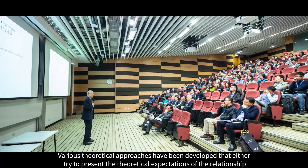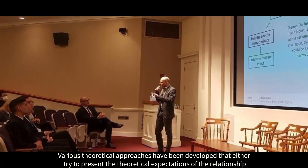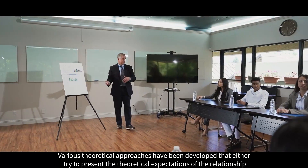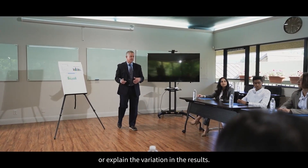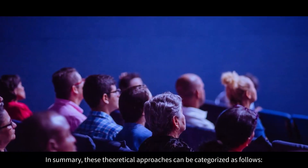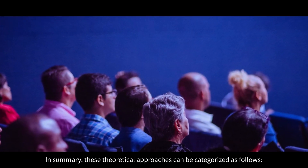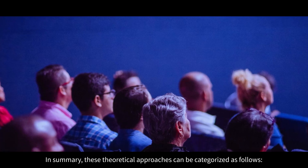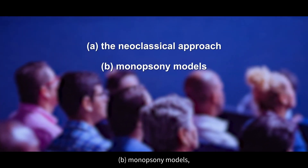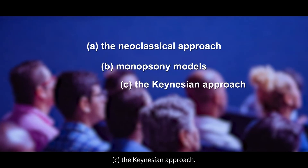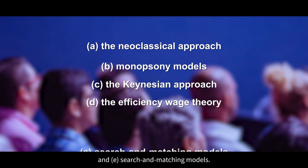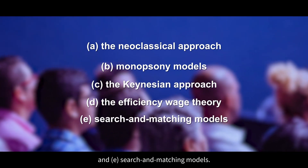Various theoretical approaches have been developed that either try to present the theoretical expectations of the relationship or explain the variation in the results. In summary, these theoretical approaches can be categorized as follows: A. The neoclassical approach. B. Monopsony models. C. The Keynesian approach. D. The efficiency wage theory. E. Search and matching models.